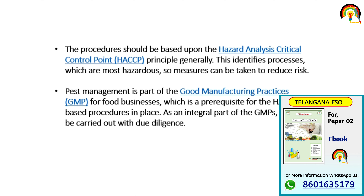The procedure should be based upon HACCP — Hazard Analysis Critical Control Point. This identifies processes which are most hazardous, meaning unsafe for the consumption of any individual or human being, so that measures can be taken to reduce risk. Second, pest management is part of GMP — Good Manufacturing Practice — for food businesses, which is a prerequisite for HACCP-based procedures.